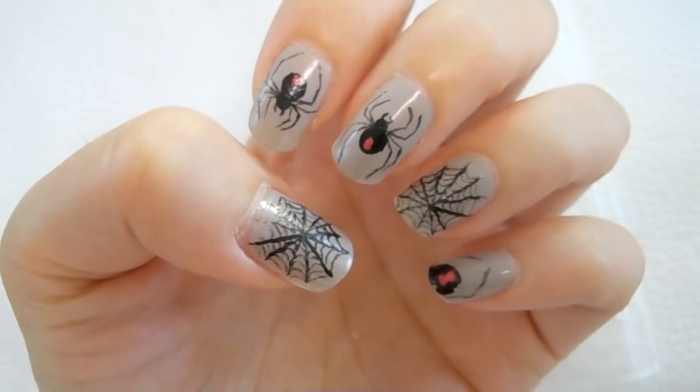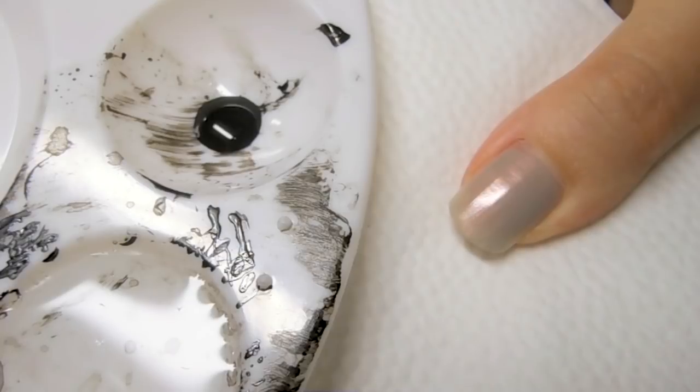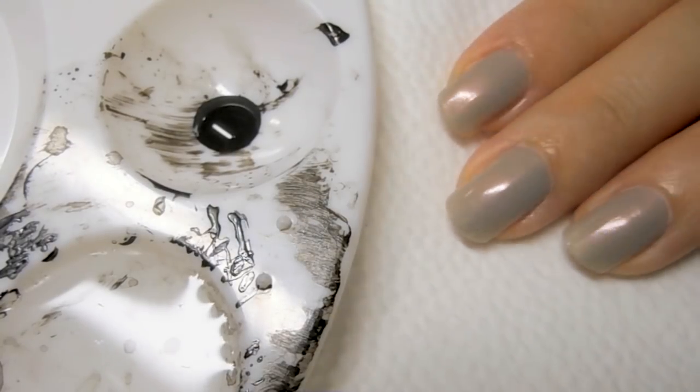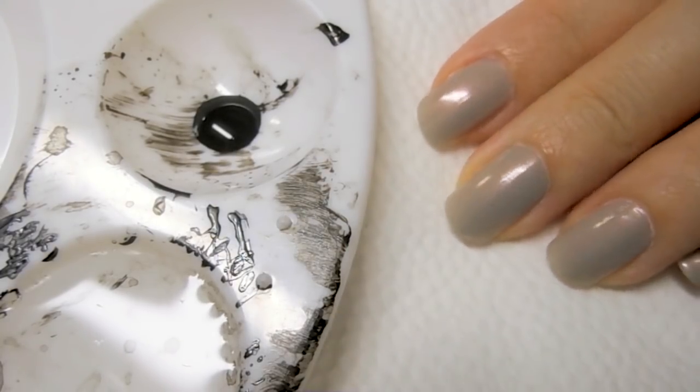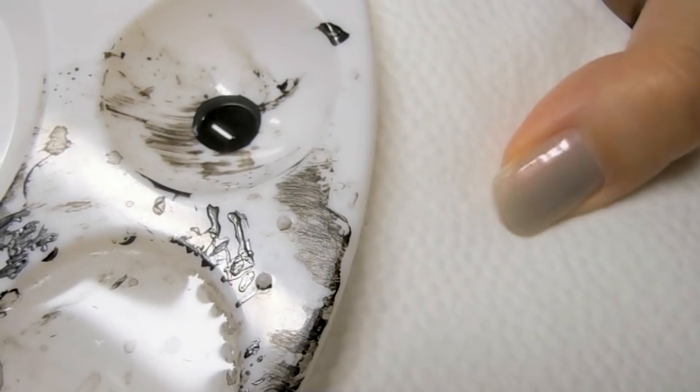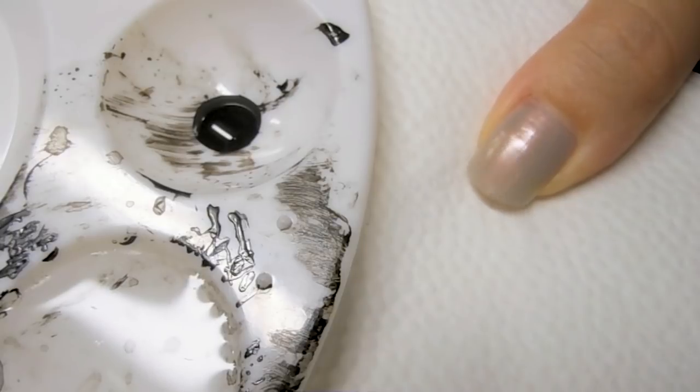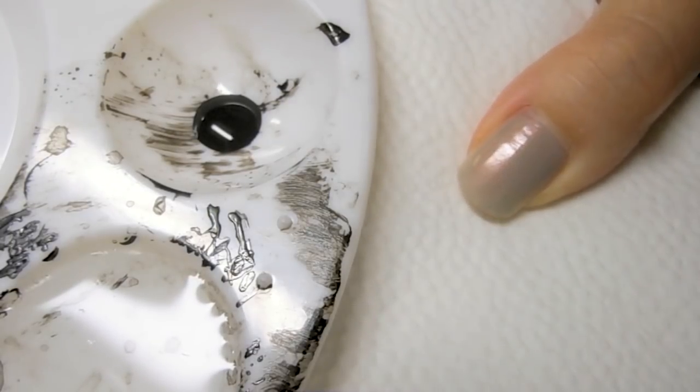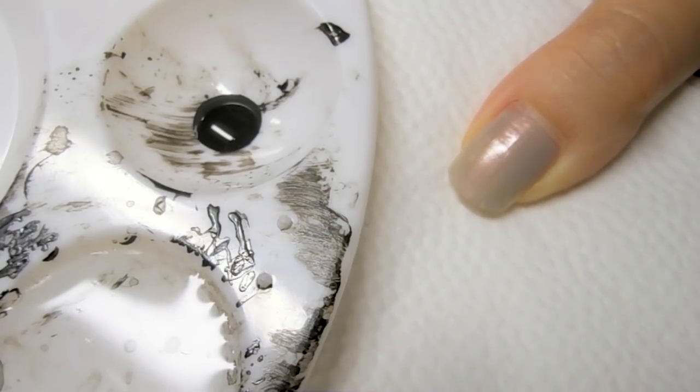I used a gray nail polish on all of my fingers. As you can see, this is two coats and this is pretty much opaque. You can use any gray polish. Mine has a shimmer, but you don't really have to have this polish. If you're curious about the kind of gray nail polish that I use in this look, just go ahead and check the description box below.